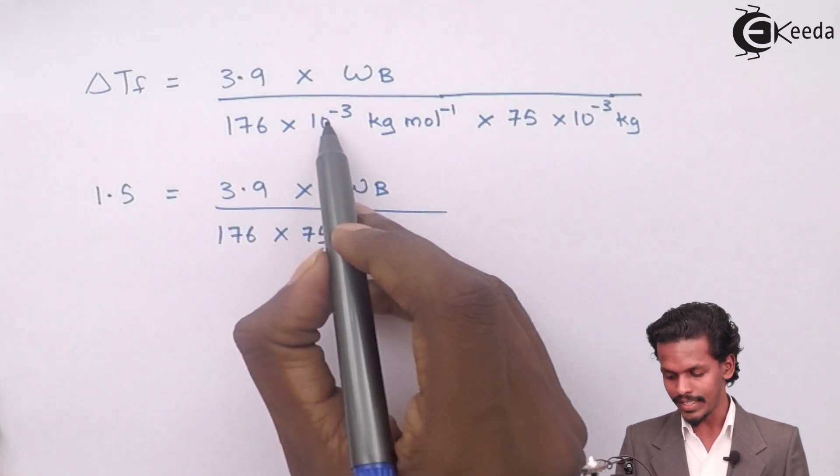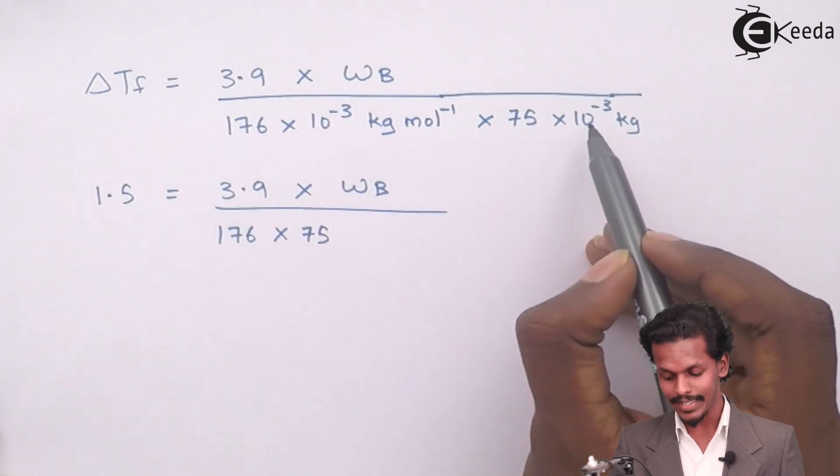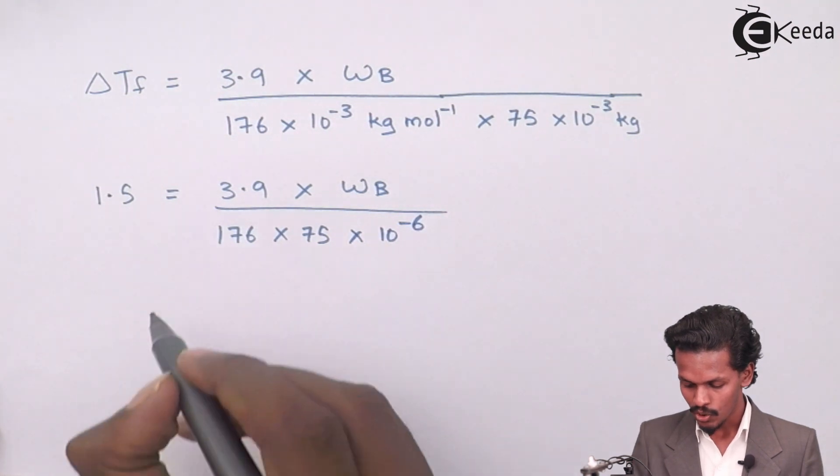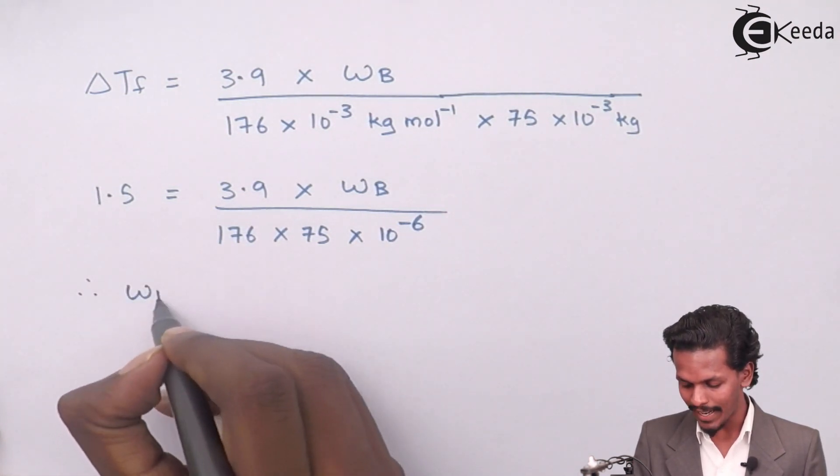This 10 raised to minus 3 will be multiplied by this 10 raised to minus 3 and it will be converted into 10 raised to minus 6, so therefore the WB can be calculated.